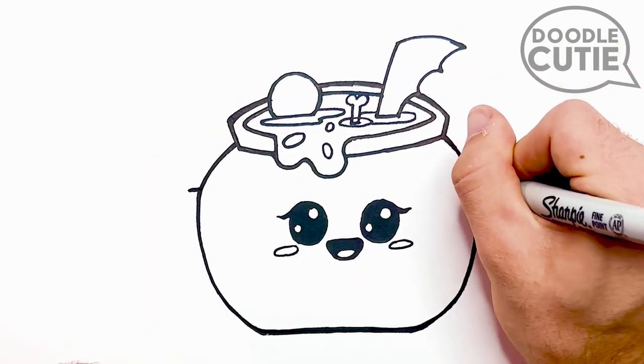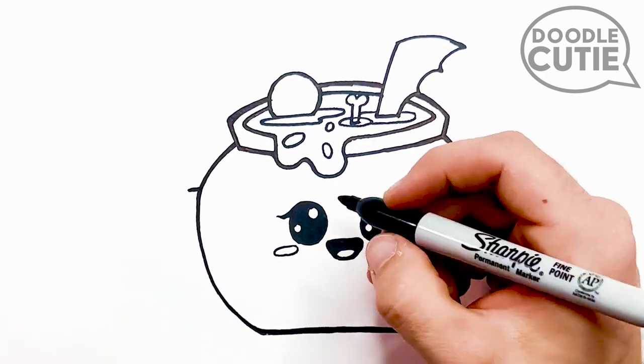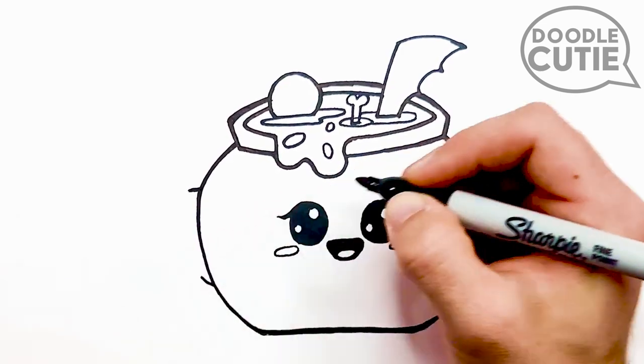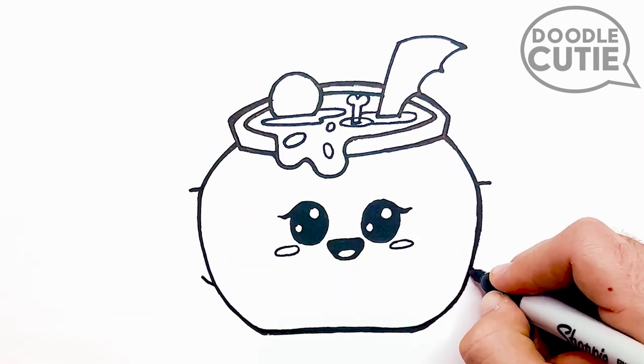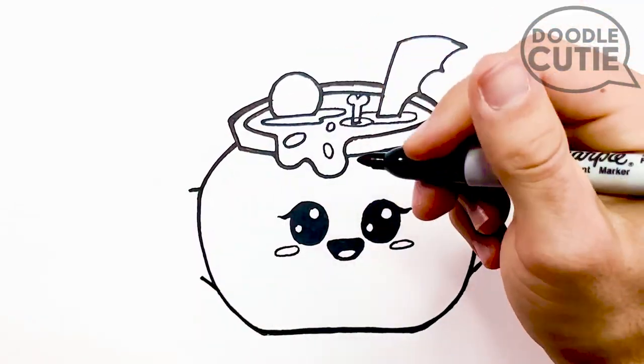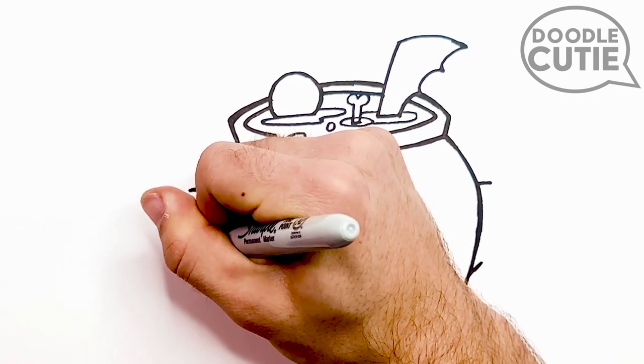Then I'll draw the handles on either side of the pot. I'll start with two lines on the top. Then two on the bottom. The bottom ones curve more towards the top of the paper. Then, after making these two lines, I'll connect them with a longer line going from bottom to top on each side.